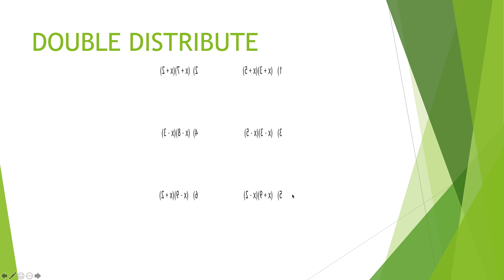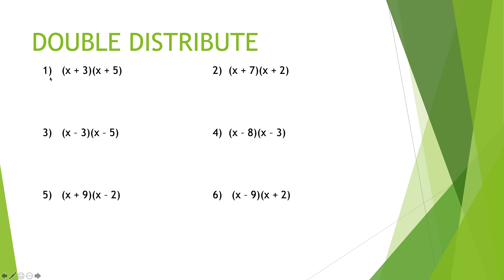If you can distribute, you can double distribute. Here are six questions for us to do. Double distribute means basically this: I'm going to cover up the three, ignore it for now, and just distribute the x by both terms — x times x, and x times five. Then I'm going to ignore the first x and just distribute the positive three to the x and the five. x times x is x squared, x times five is five x, three times x is three x, and three times five is fifteen. Every single time you do this you will be able to combine like terms in the middle.